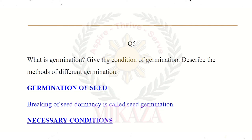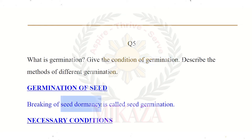Question number 5: What is germination? Give the conditions of germination and describe the different methods of germination. Germination is the process when a seed begins to grow into a plant — the seed sprouts and develops its shoot and root system. The seed plant grows from a dormant seed into a new plant.